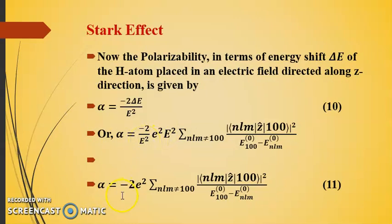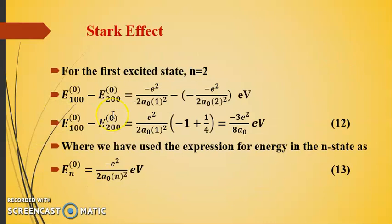Now for the first excited state n equals 2, which is characterized by the energy expression E_n^(0) equals to minus e squared by 2a_0 n squared electron volt. Here we have n equal to 2, so the energy difference E_100^(0) and E_200^(0) will be given from this expression itself.